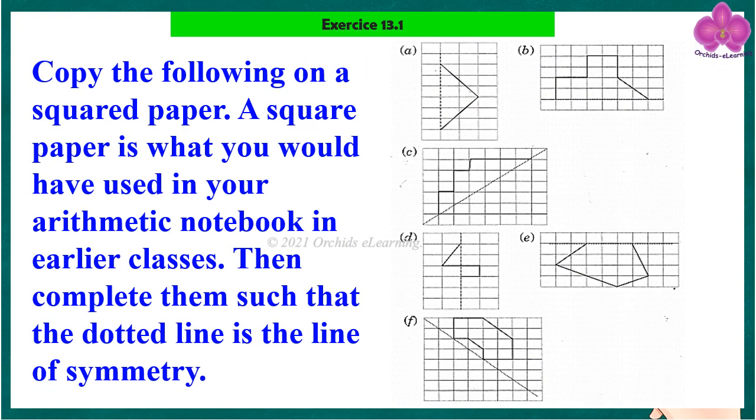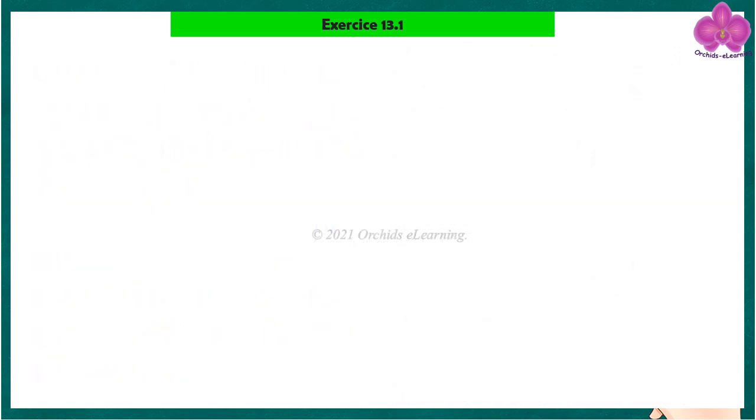Copy the following on a squared paper. A squared paper is what you would have used in your arithmetic notebook in earlier classes. Then complete them such that the dotted line is the line of symmetry. Observe the completed figures.